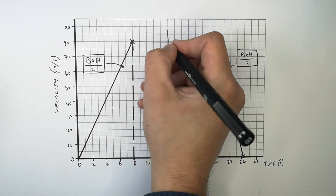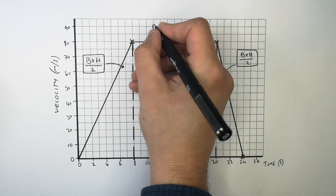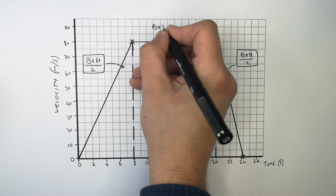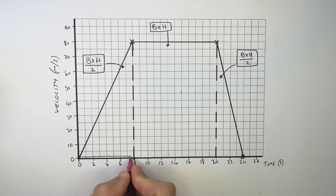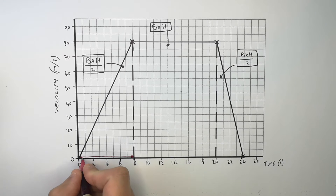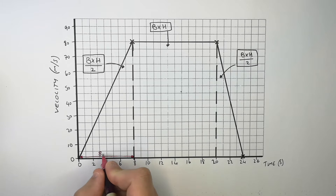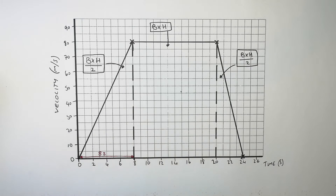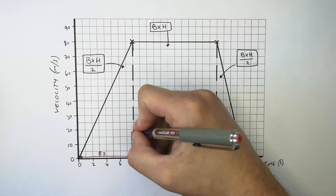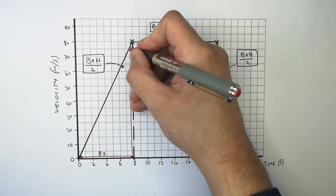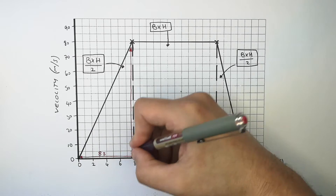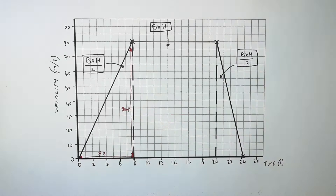To calculate the area of a rectangle or a square, it is base times height. We're going to use the equation base times height divided by two. You must identify the base — this is going to be eight seconds, so b equals eight. Then to work out the height of the triangle, that's going to be the velocity change, so that is going to be 80 metres per second.